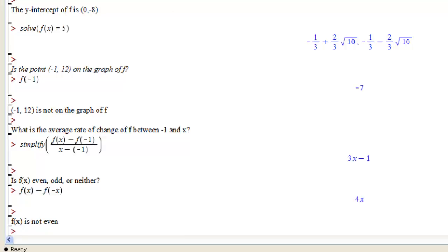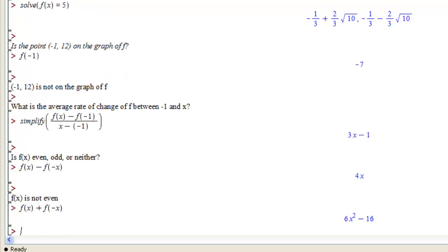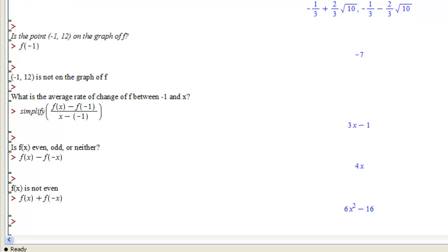Similarly, an odd function has f of x equal to the negative of f of negative x. So to test that, you ask what is f of x plus f of negative x. And if that's 0, then your function is odd. And if it's something else, then that function is not odd. Here it's 6x squared minus 16. So we see that f of x is not odd.